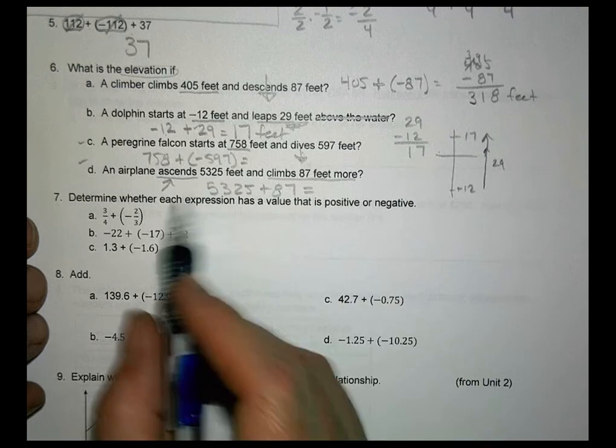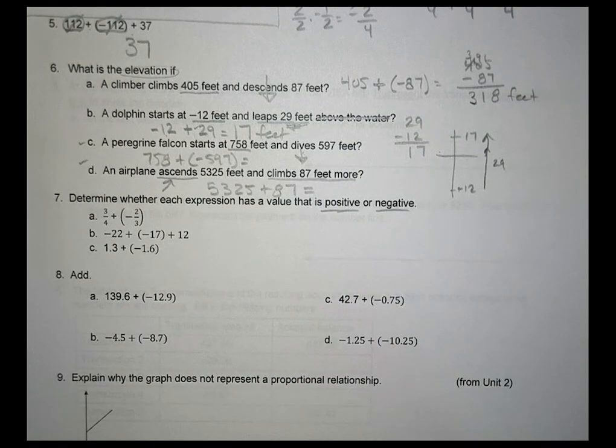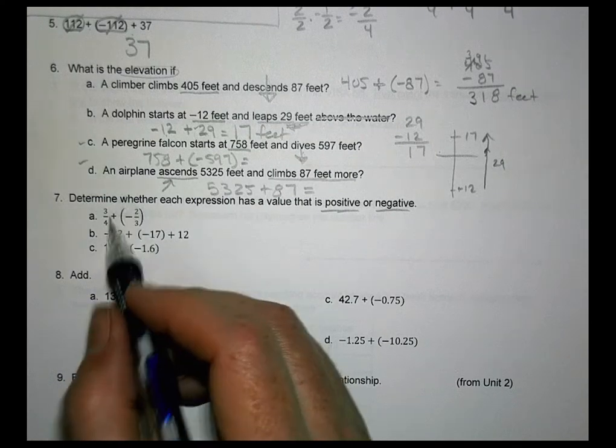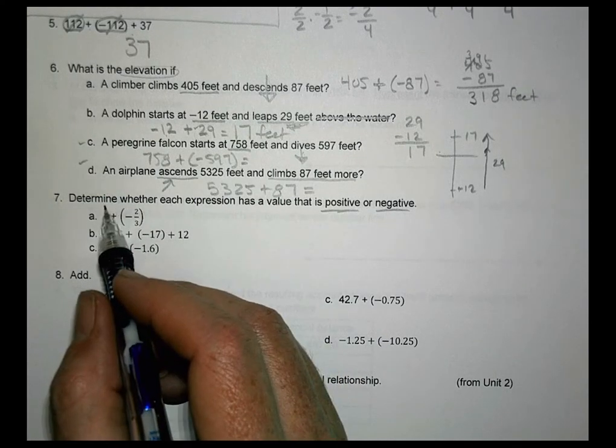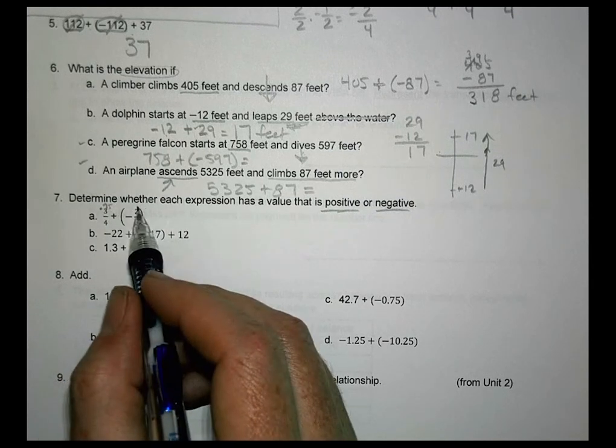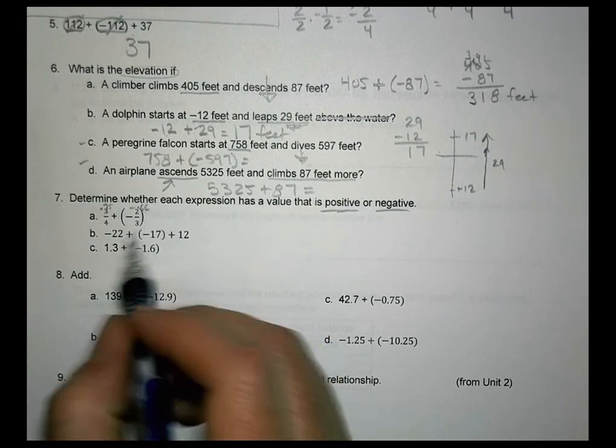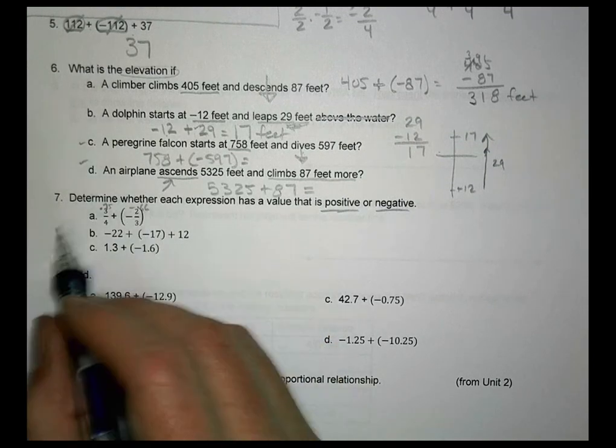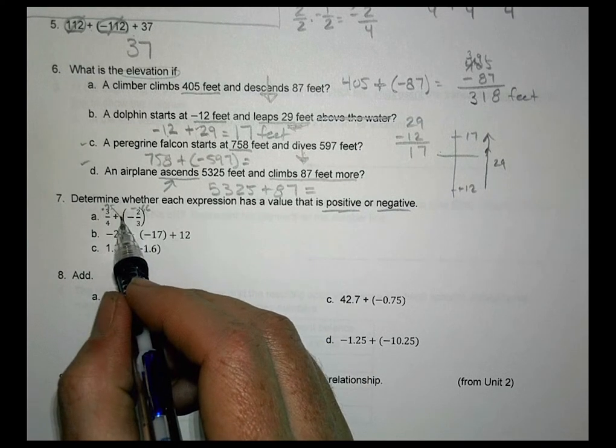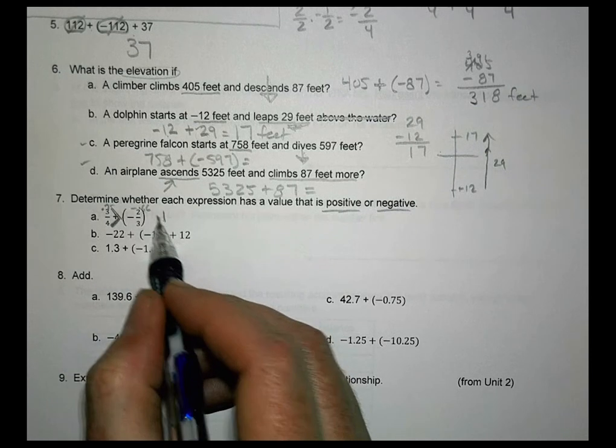For number 7, it says determine whether each expression has a value that is positive or negative. You don't have to solve it, it just wants to know if it's positive or negative. So let's see what you know about some numbers. So 3 out of 4, that's like a 0.75. It's a decimal. I know you guys love your decimals. And this one here is at a 0.66. So it's negative. So when you combine those together, which one has the bigger absolute value? Well, this one does here. So we would say that because that one has a greater absolute value, it's going to be a positive solution.